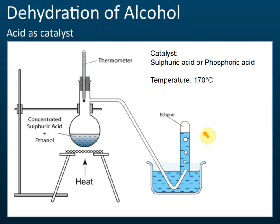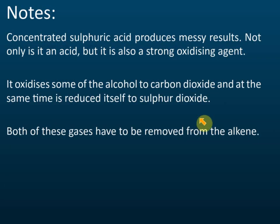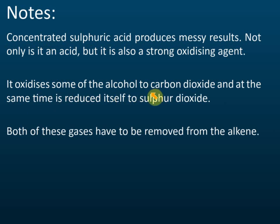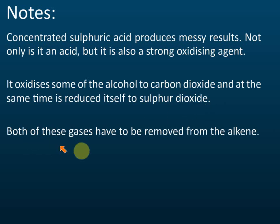An important note: concentrated sulfuric acid produces messy byproducts if the temperature is not controlled. Not only is it an acid, but it is also a strong oxidizing agent — it oxidizes some of the alcohol to carbon dioxide, and the sulfuric acid itself is reduced to sulfur dioxide. So both carbon dioxide and sulfur dioxide must be removed from the ethene product.